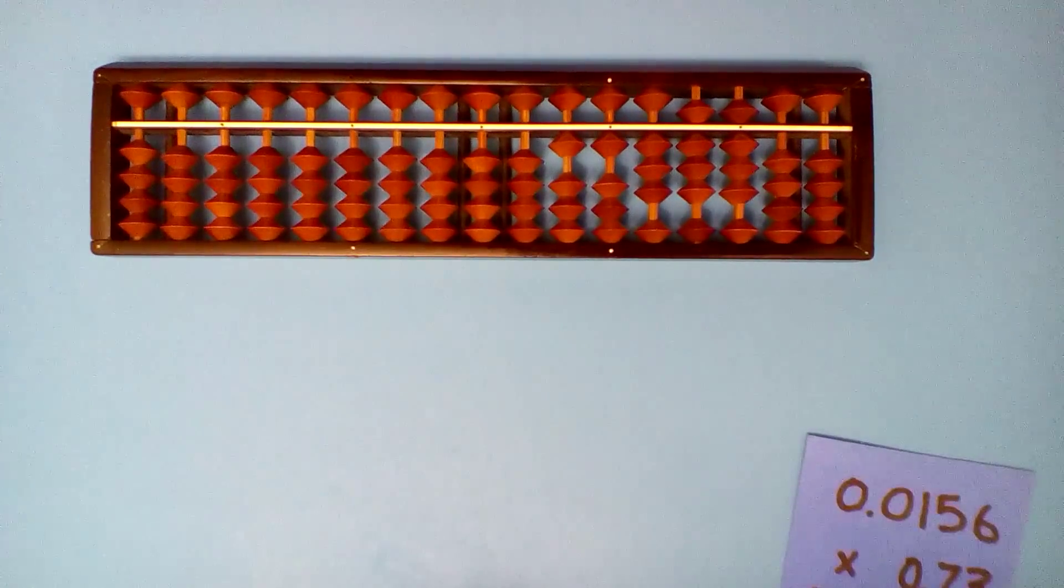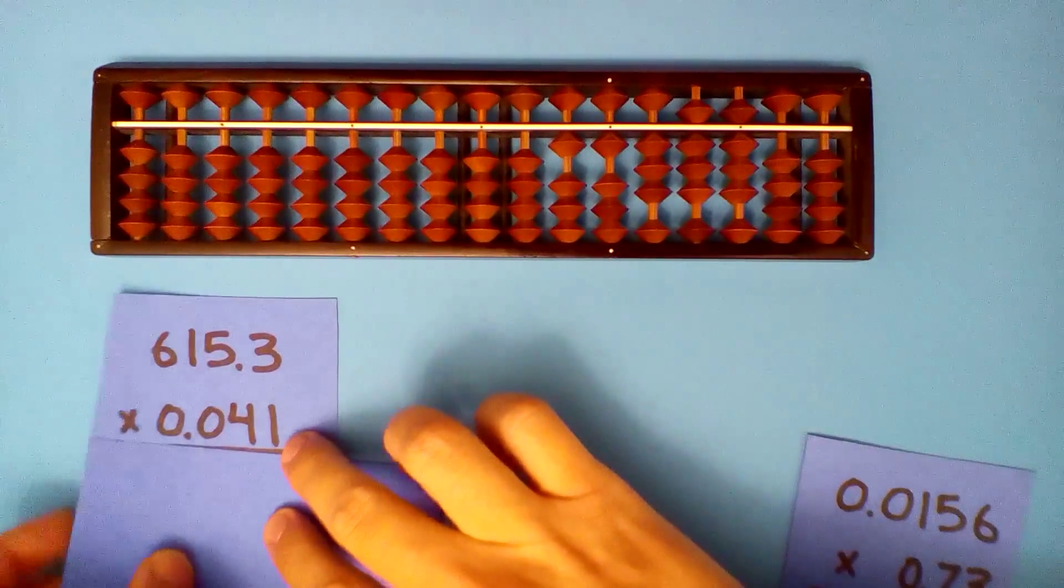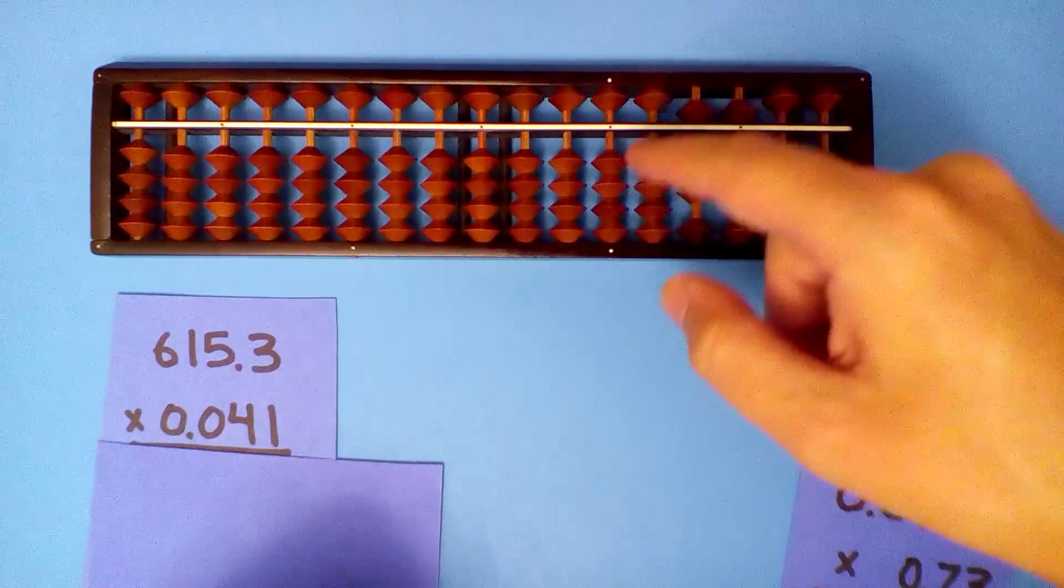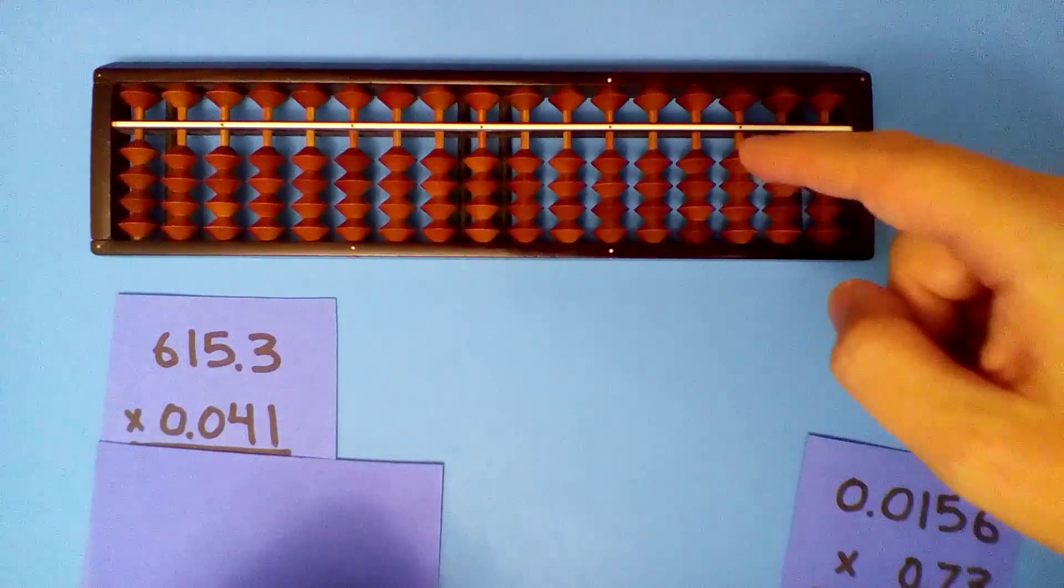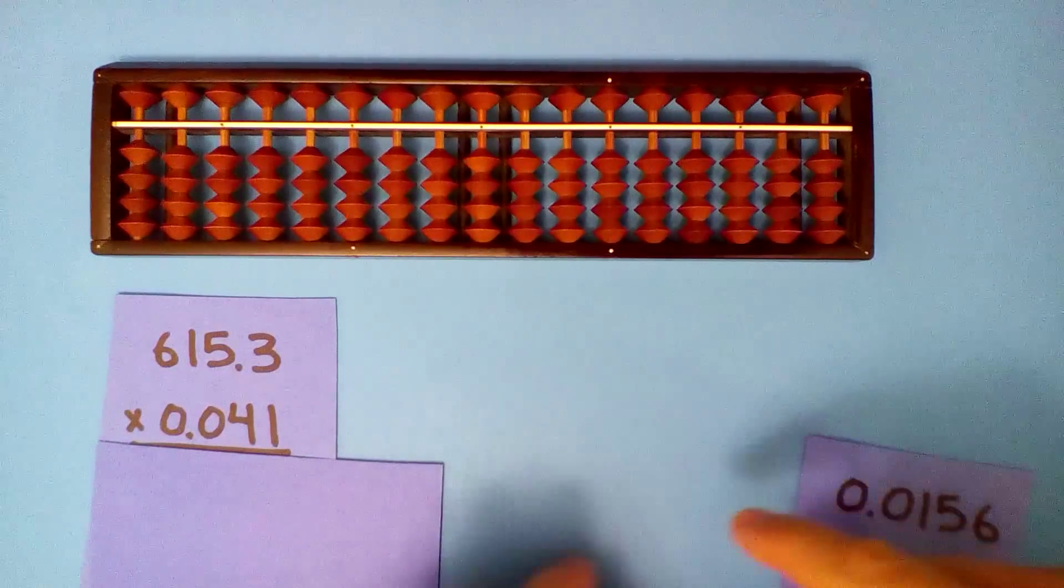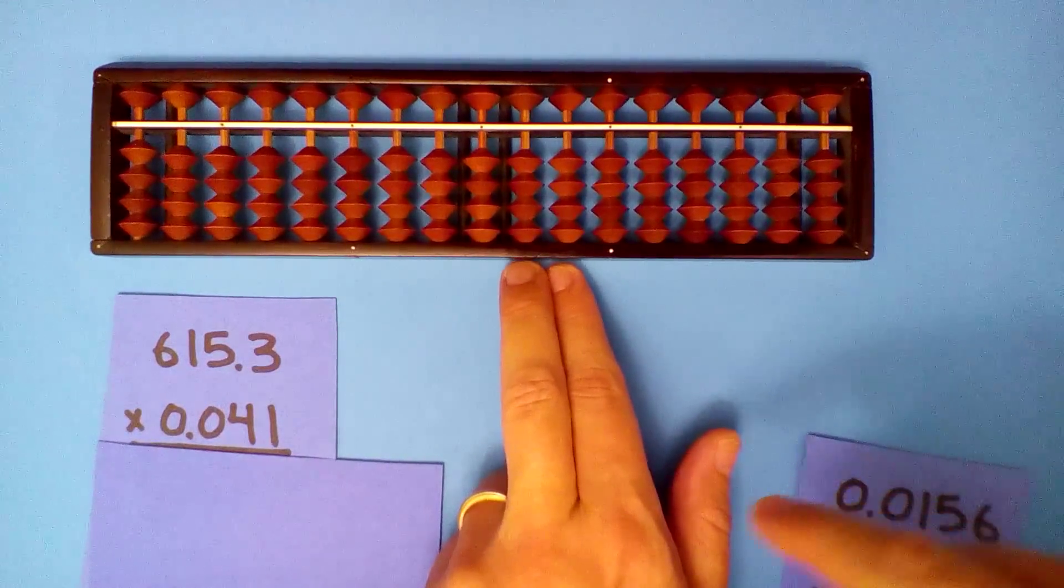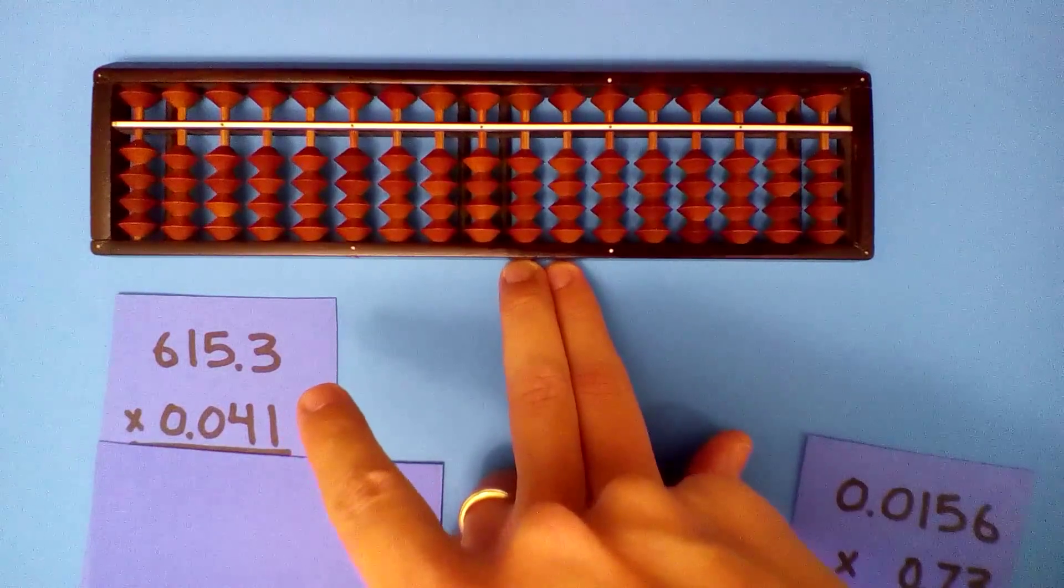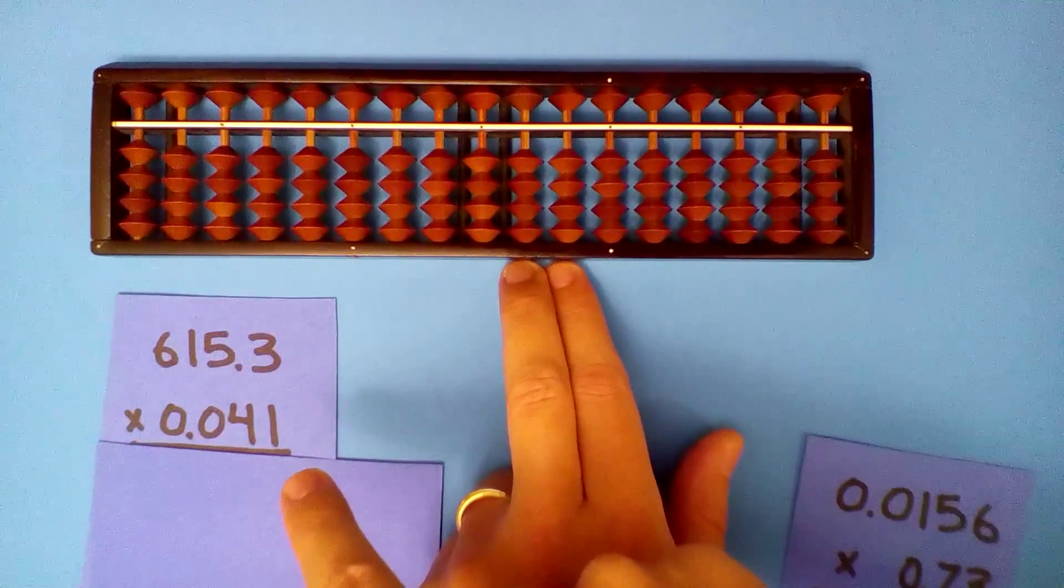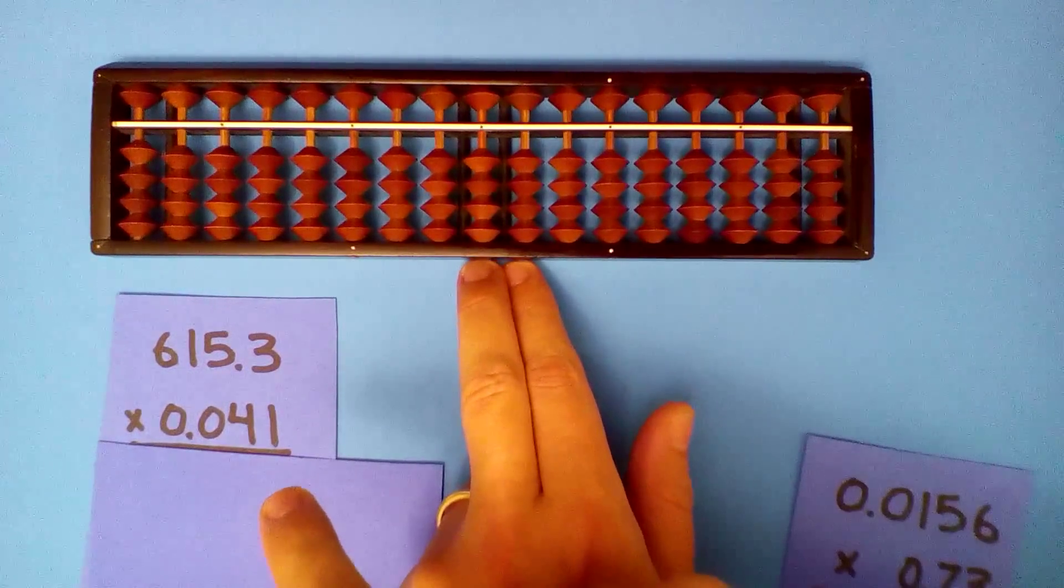One more example. What is 615.3 times 0.041? Start on the tenths and hundredths. Three digits minus one digit for a total of two. One, two.